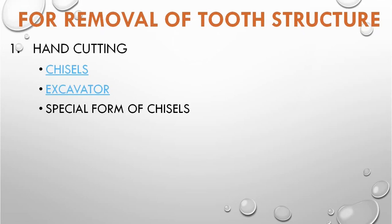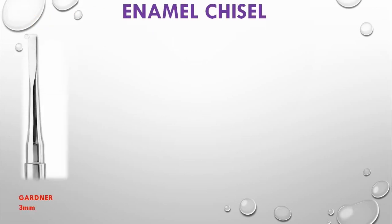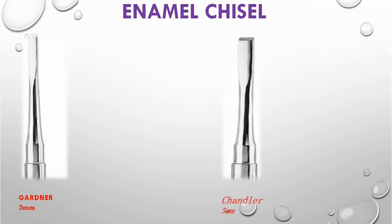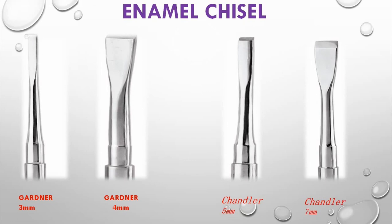Instruments for removal of tooth structure are of two types: hand cutting and rotatory cutting instruments. Hand cutting chisels are used for cutting enamel. They are among the first instruments used in operative dentistry for making cavities on plaster models. They are of three types: straight, mono-angle, or bin-angle chisels.